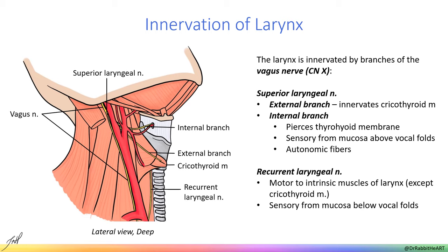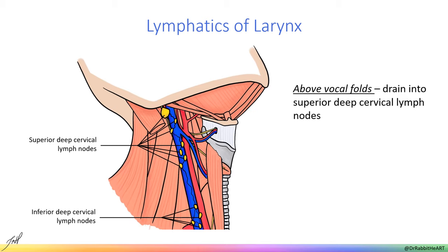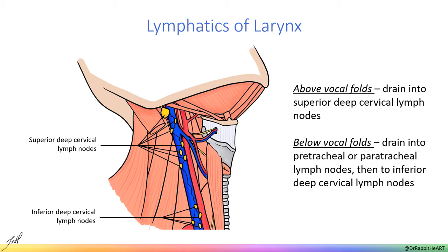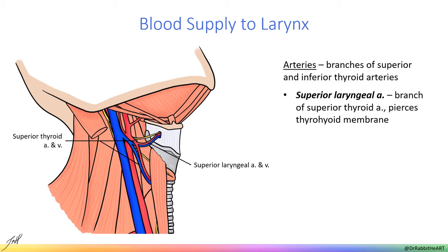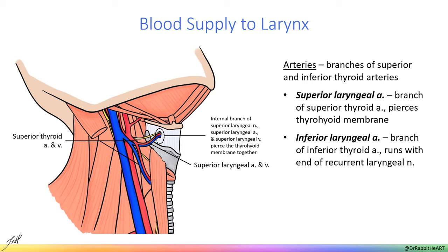Lymphatics from the larynx drain to two places. Above the vocal folds, lymph drains into superior deep cervical lymph nodes found near the superior aspect of the internal jugular vein. Below the vocal folds, lymph drains into pre- or paratracheal nodes and then into inferior deep cervical lymph nodes. The larynx receives blood from the superior and inferior laryngeal arteries. The superior laryngeal artery is a branch of the superior thyroid artery, which travels through the thyrohyoid membrane with the internal branch of the superior laryngeal nerve, while the inferior laryngeal artery is a branch of the inferior thyroid artery. Blood is drained from the larynx by the superior and inferior laryngeal veins.